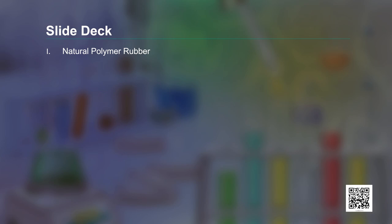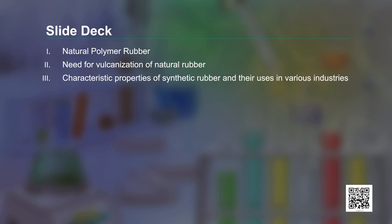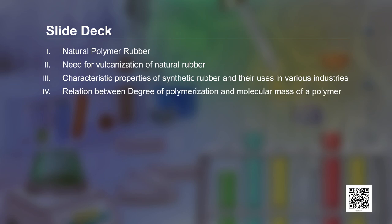We also familiarized ourselves with various terms such as monomers, homopolymers, copolymers, and degree of polymerization. All these concepts are reiterated in this concluding session, wherein we will learn about natural polymer rubber, the need for vulcanization of natural rubber, the characteristic properties of synthetic rubbers, the relation between degree of polymerization and molecular mass, and the synthesis of biodegradable polymers.